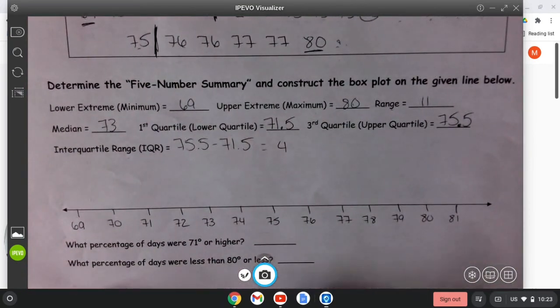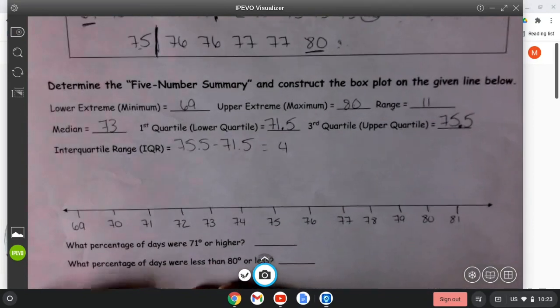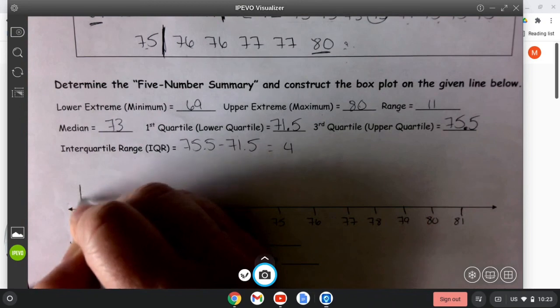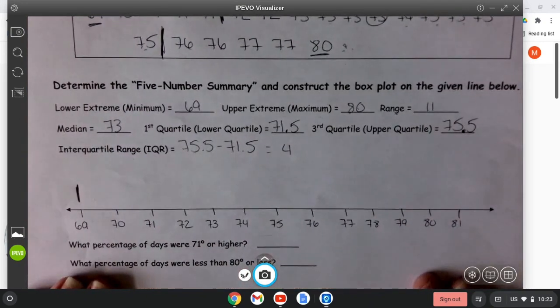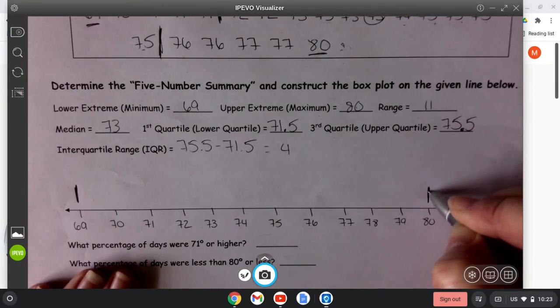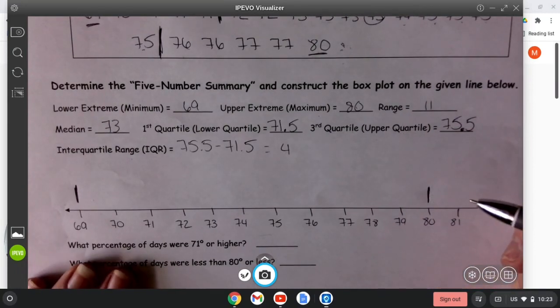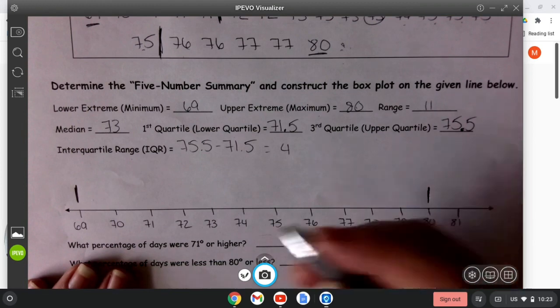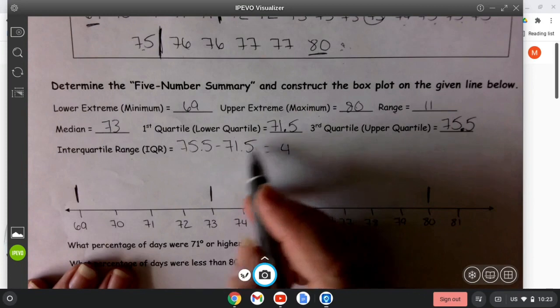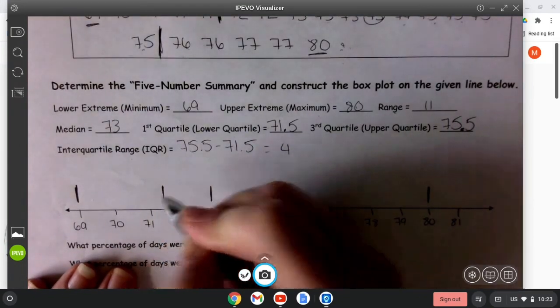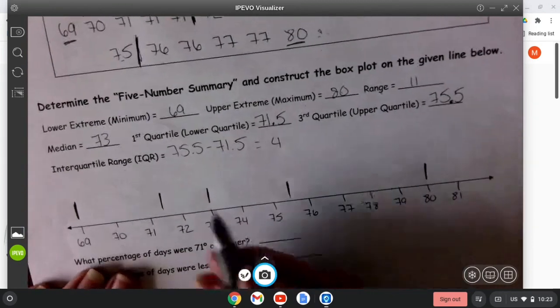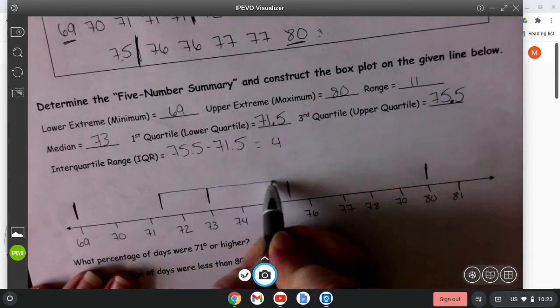So the last step here is just to now put it on my number line. My lower extreme is 69 so I'm going to mark it with a line like this. The upper extreme, mark it also with a line above the 80. The median is 73 and mark it with a line. 71.5 is my first quartile and my third quartile is 75.5.